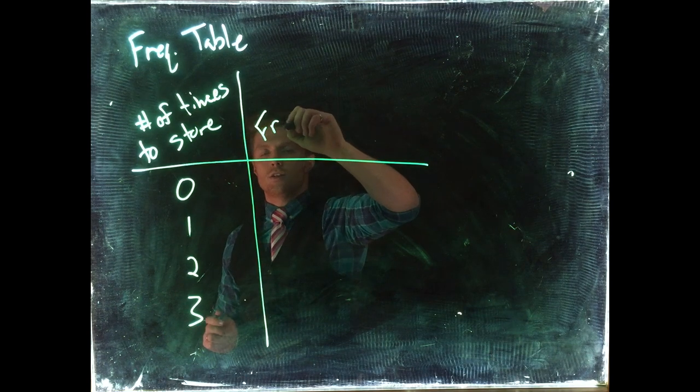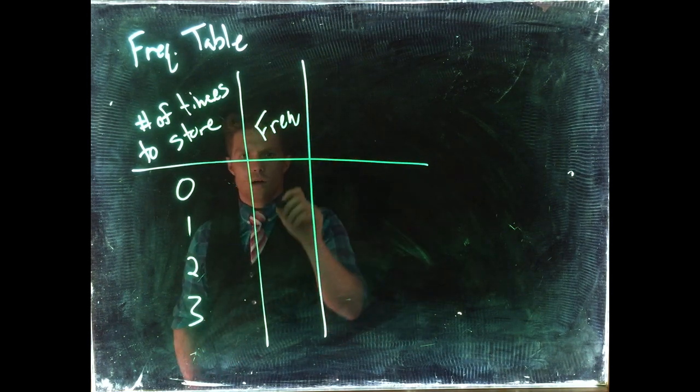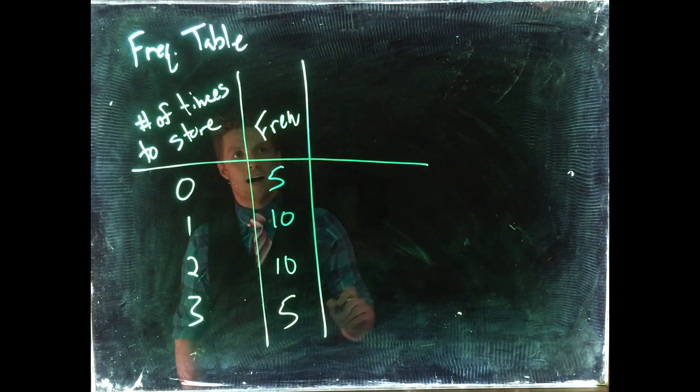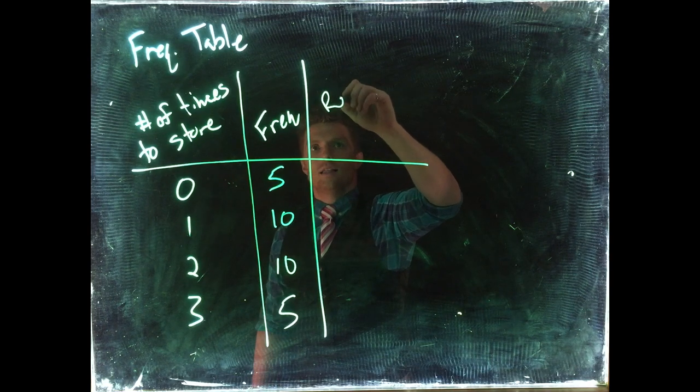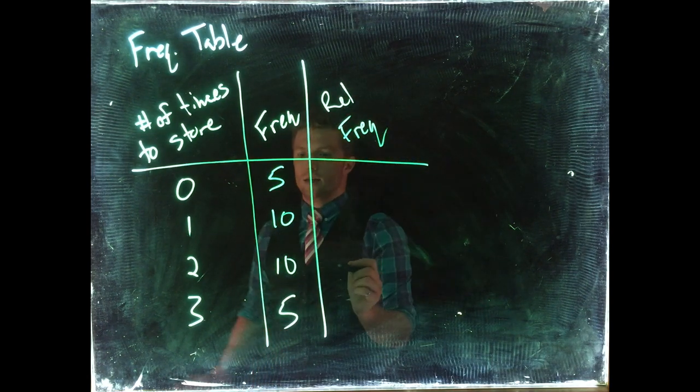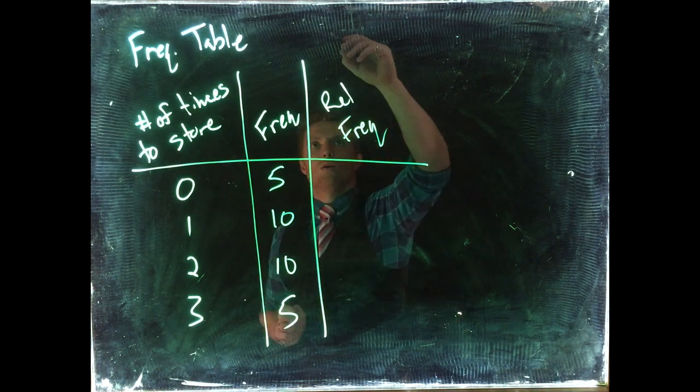We had five, ten, ten, and five. Then we also calculated out the relative frequency, which is just the frequency divided by the sample size. Our sample size, remember, the variable is n for sample size, equals 30, or the total of all of our measured events.